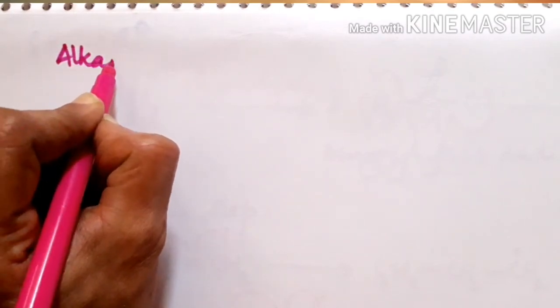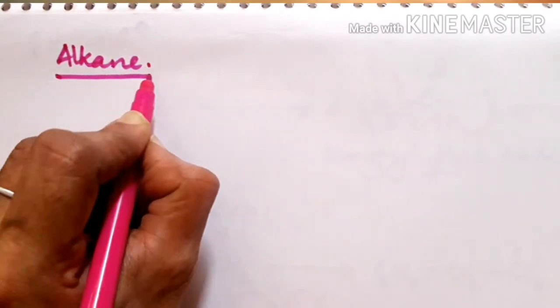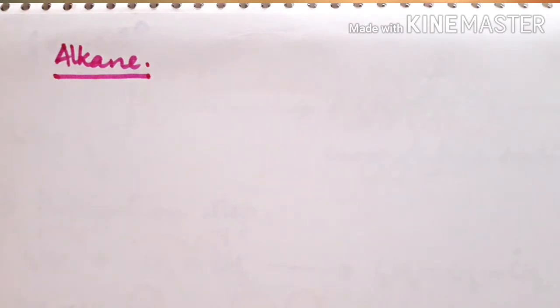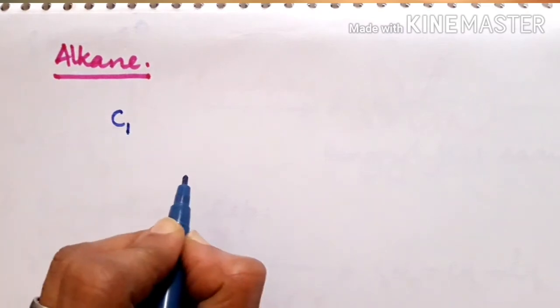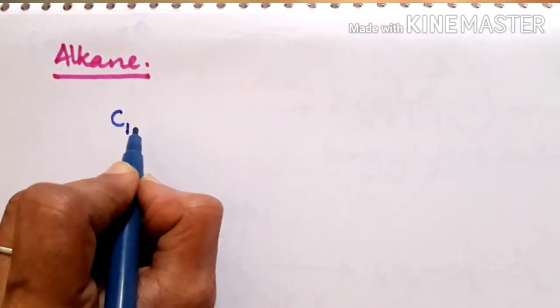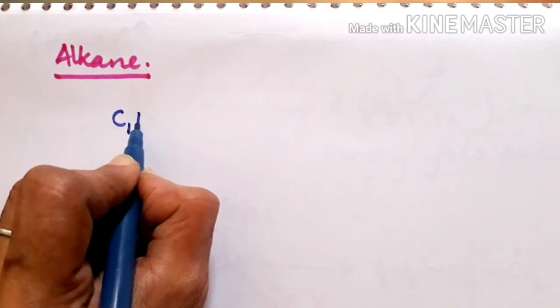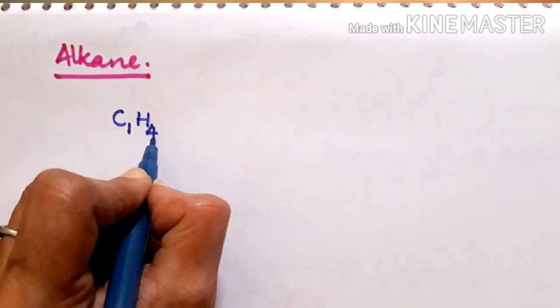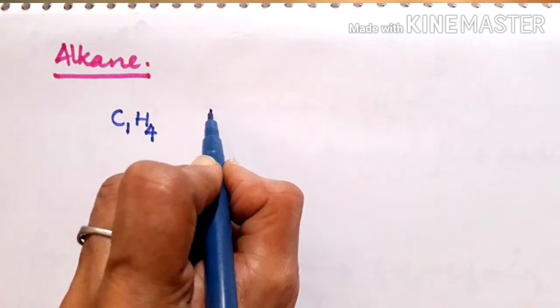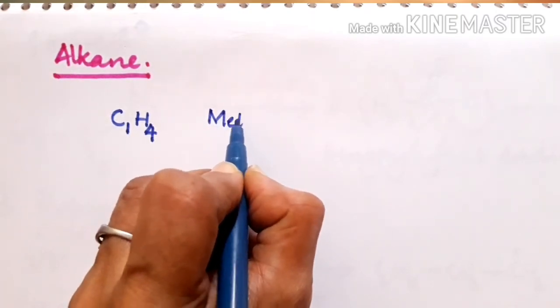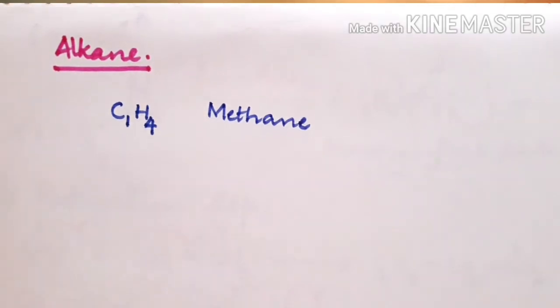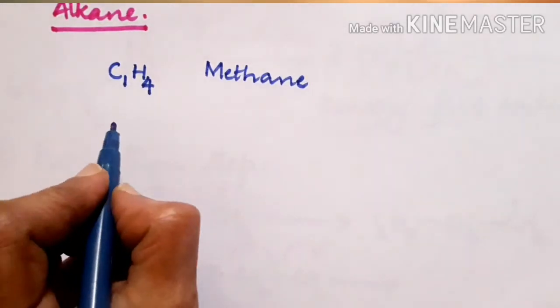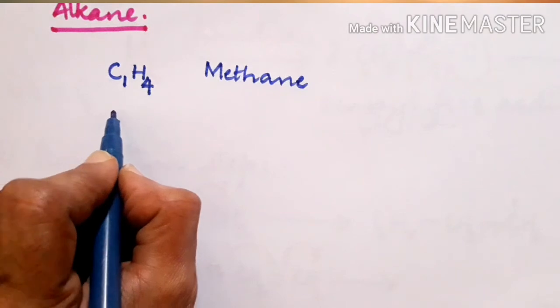We start with alkanes. The simplest one will have the central atom C1 and there will be 4 bonds around it with CH4. The prefix is meth and it should end with -ane, so the name is methane.